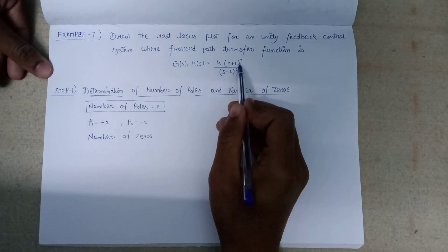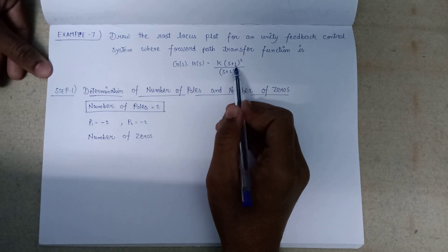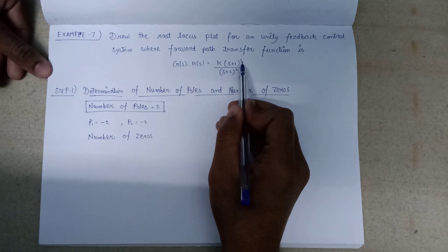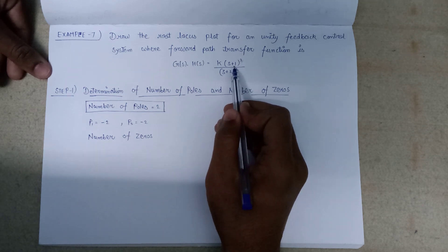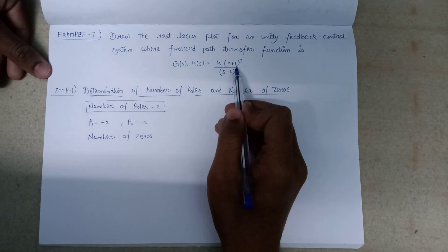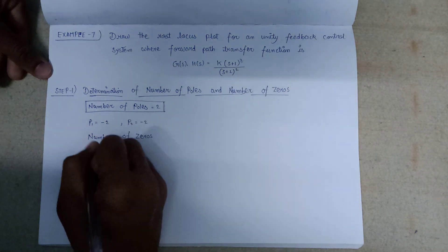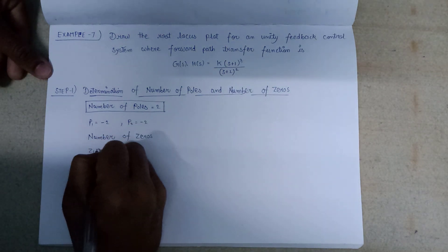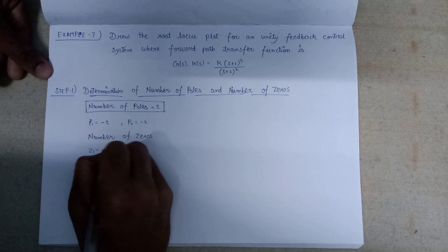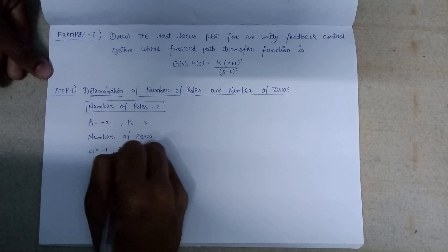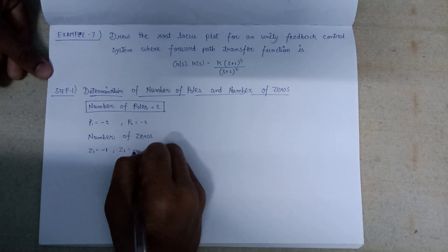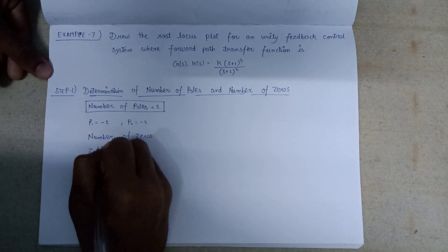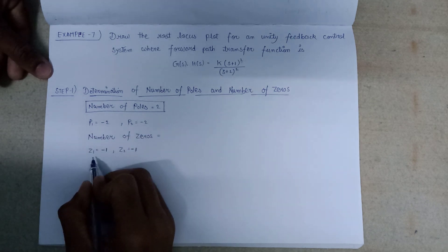On equating (s+1) = 0 we get 2 zeros because it is a whole square. Zero Z1 lies at s = -1 and Z2 also lies at s = -1. So the number of zeros is equal to 2.